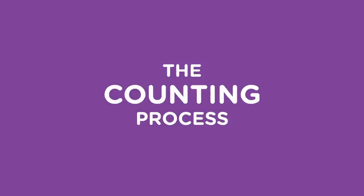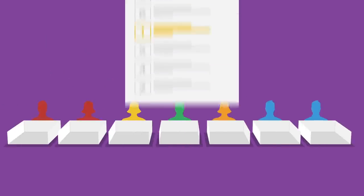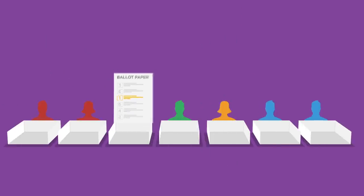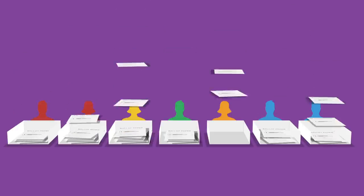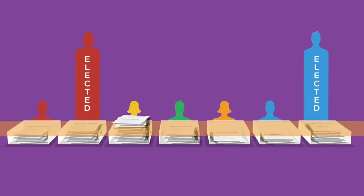The counting process. First, ballot papers are sorted according to the first preference listed — the number one vote. Some candidates will have reached the quota. These candidates are elected.